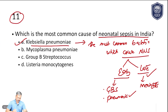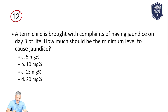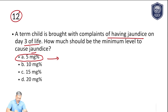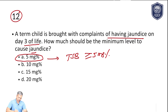Question number 12: a term child is brought with complaints of jaundice on day three of life. How much should be the minimum bilirubin level to cause visible jaundice? We have already solved this type of question today, so the answer is simple — it is five milligram percent. In a neonate, to see visible jaundice, the total bilirubin level should be greater than or equal to five milligram percent.